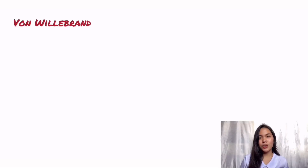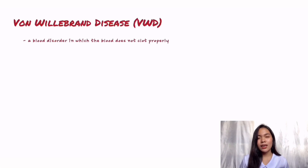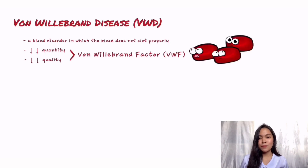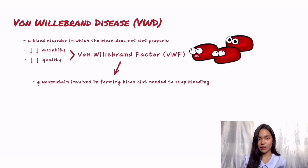Von Willebrand disease is a blood disorder in which the blood does not clot properly. People with von Willebrand disease either have a decreased quantity and quality of the von Willebrand factor, which is a plasma glycoprotein that plays a key role in forming the blood clot needed to stop bleeding.